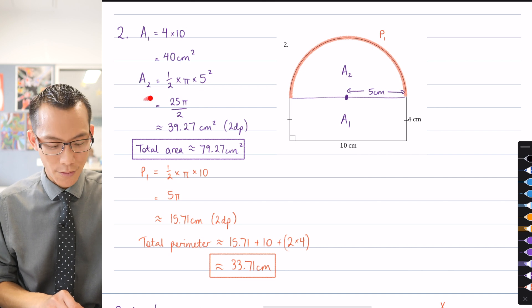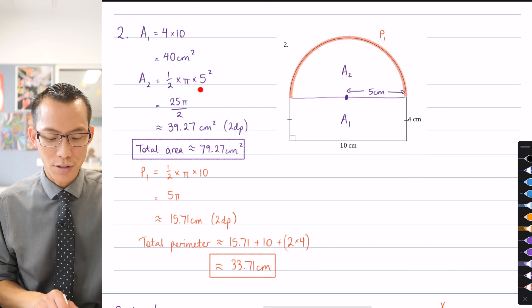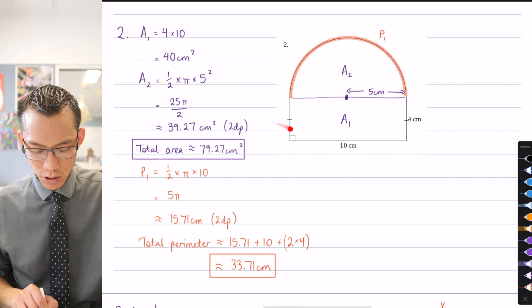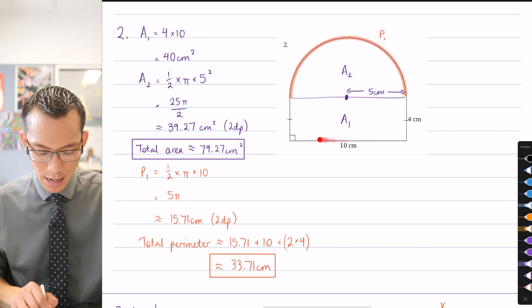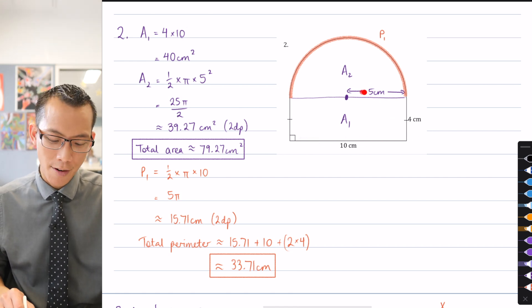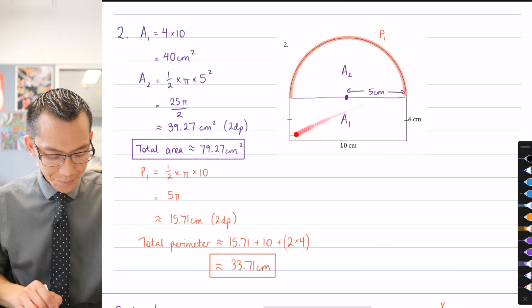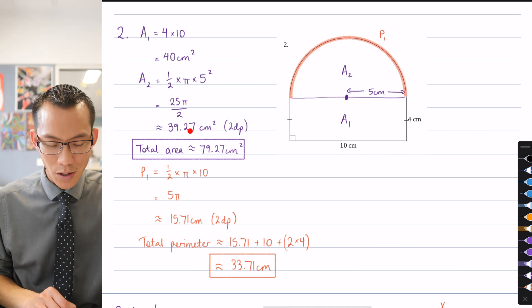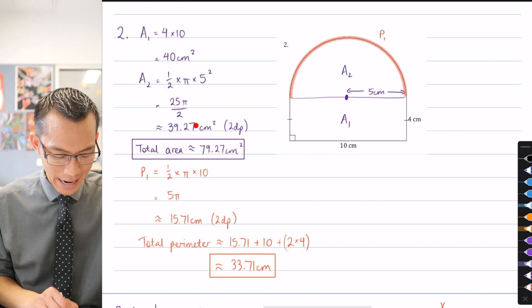And then when it comes to the semicircle, I've got half times pi times the radius squared. And you just have to watch for the fact that 10 across here is the diameter. So I had to halve that to get the radius. That gives me this area once I approximate it out and get pi out of the way.